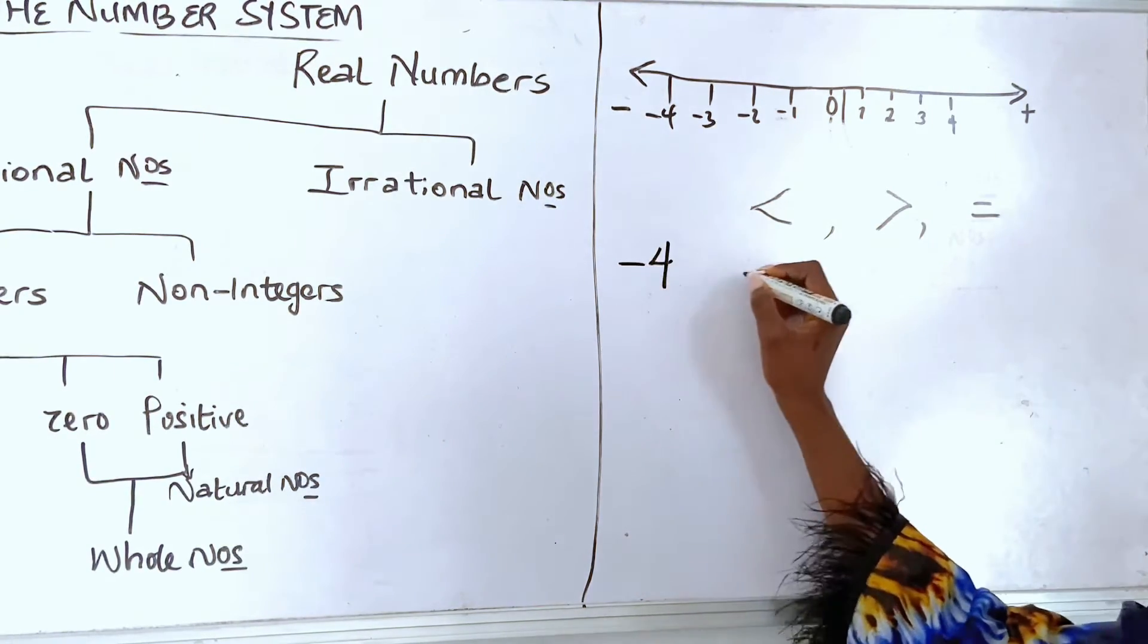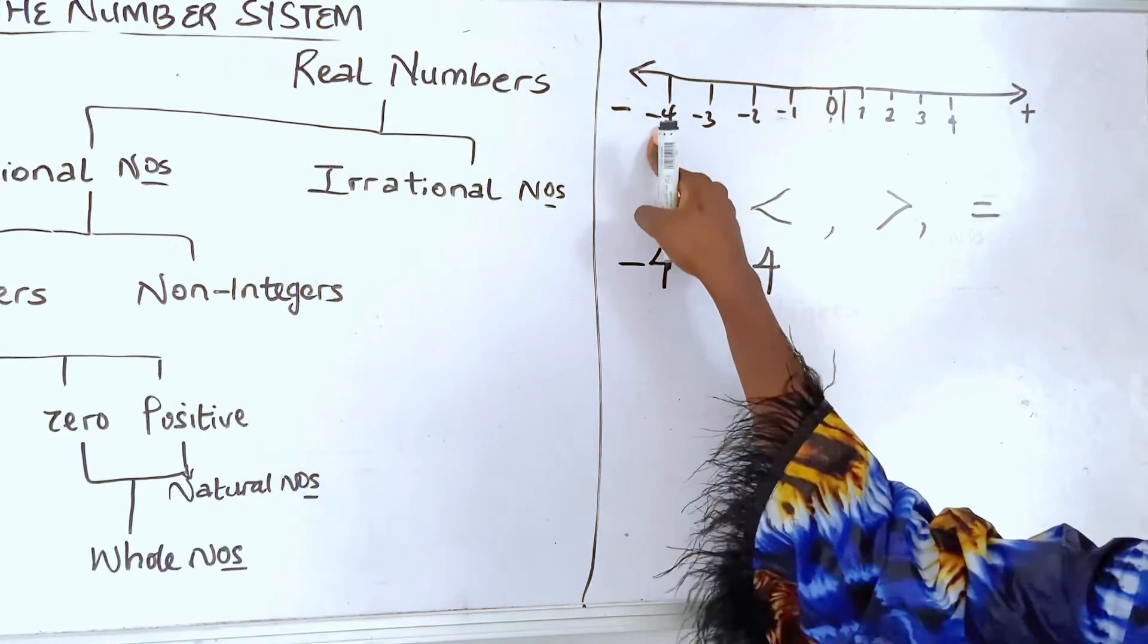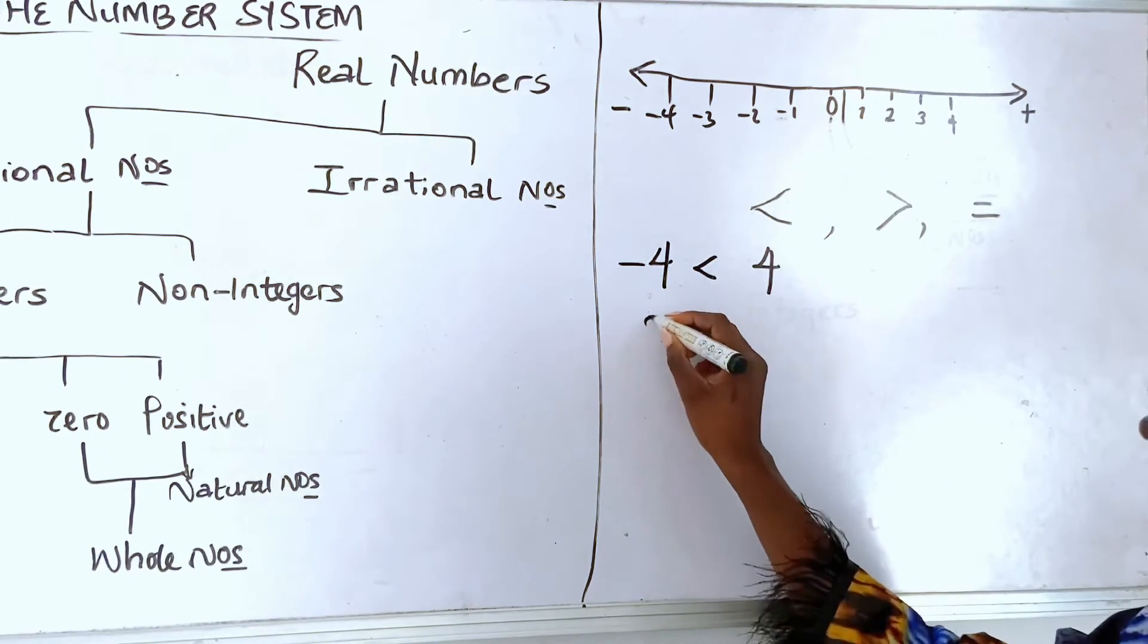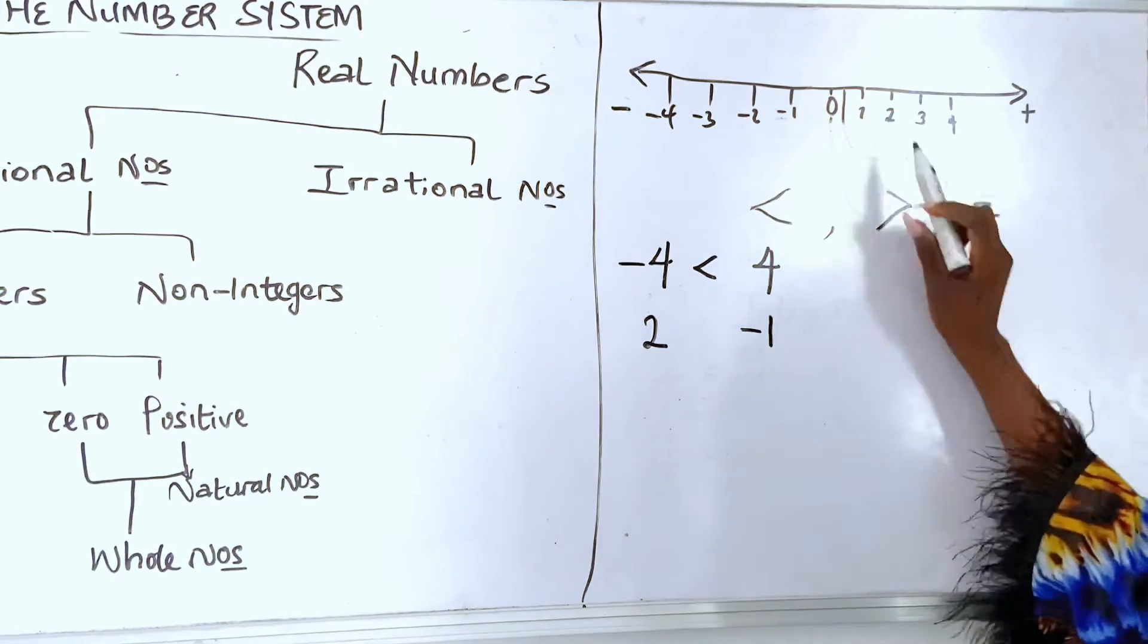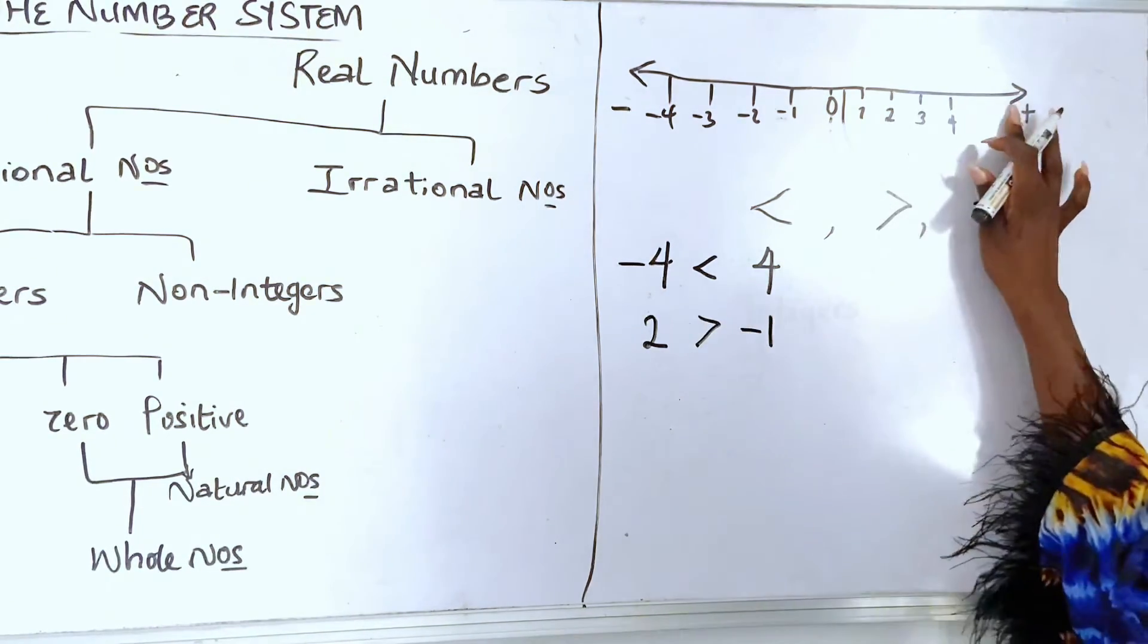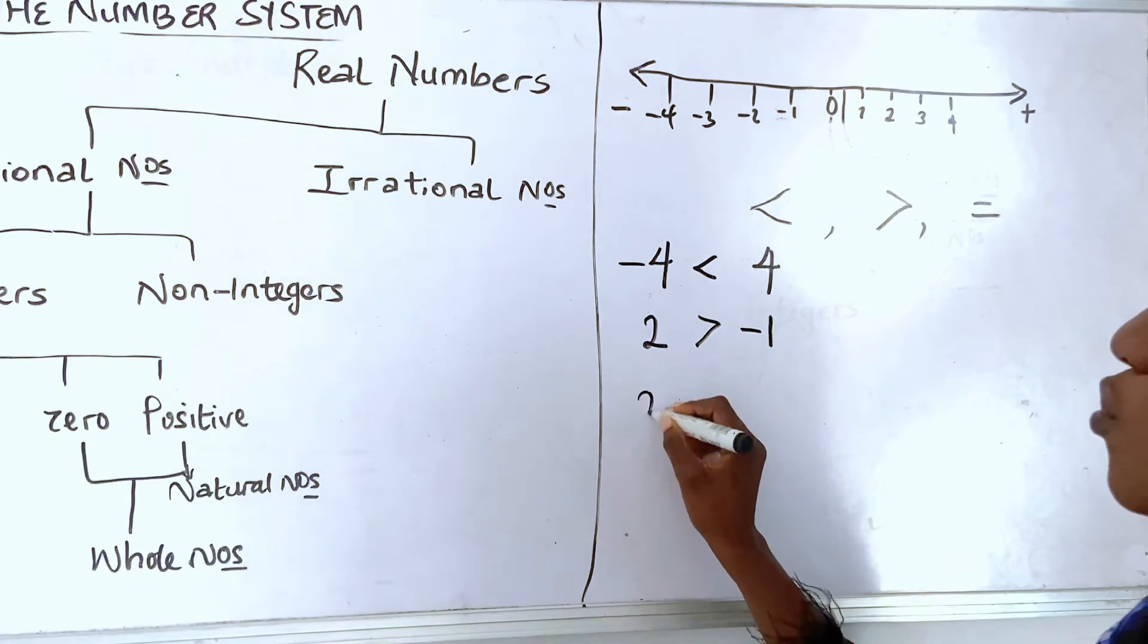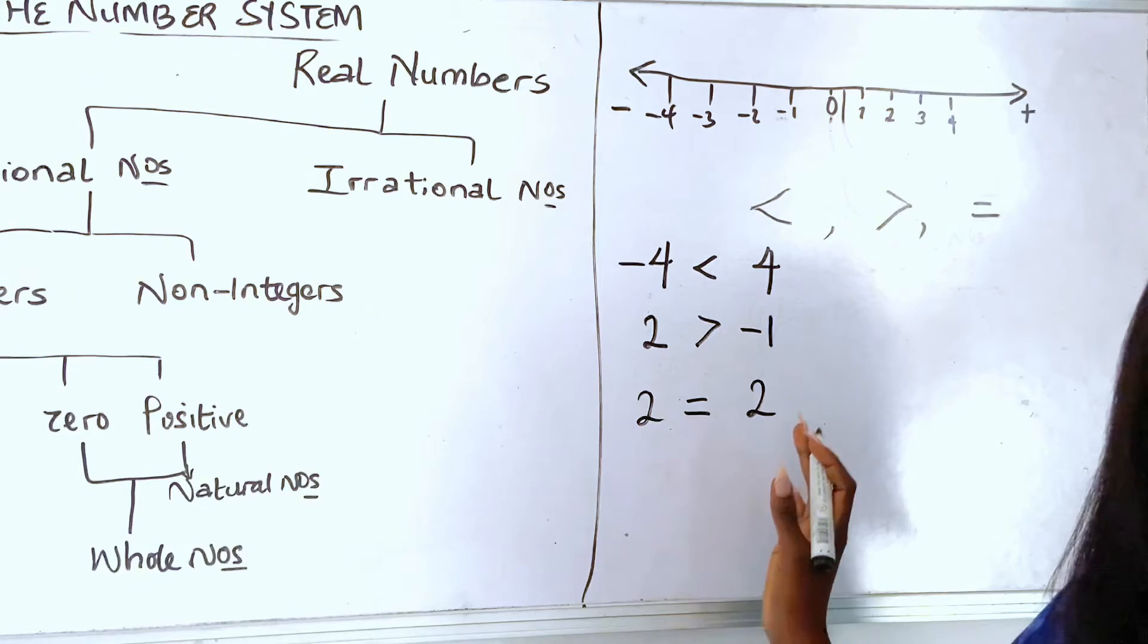So, minus 4 is what to 4? It's less than 4. Right? 2 is what to minus 1? 2 is here. So, 2 is greater than minus 1. Does that make any sense? 2 is what to 2? 2 is equal to 2.